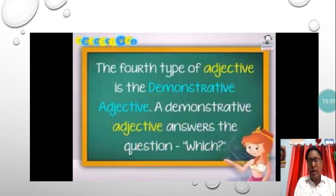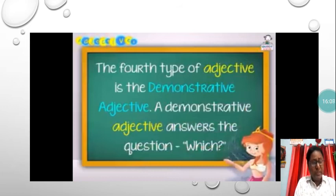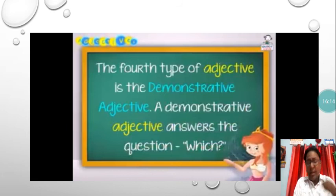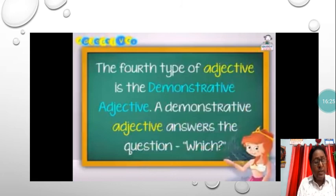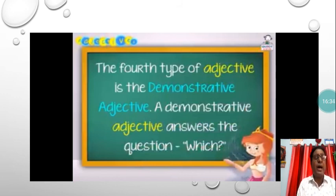For example: This boy is stronger than my brother. Here you are pointing to a boy who is standing near you — this boy. Similarly: These grapes are sour — here you are pointing out some grapes which are kept near you. So demonstrative adjective answers the question which.